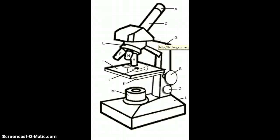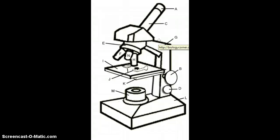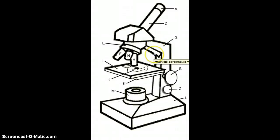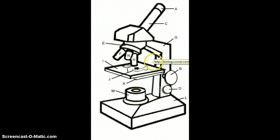The fine adjustment knob is also for minute focusing. You can use this after you have focused with the coarse adjustment knob. Okay guys, so now that I've finished reading that to you, I'm going to show you the parts of the microscope.